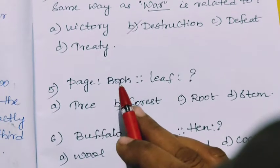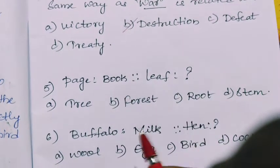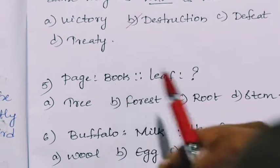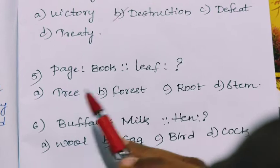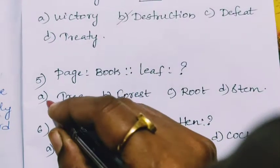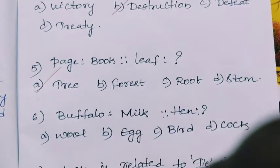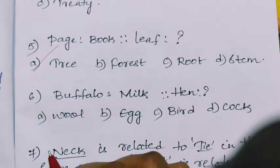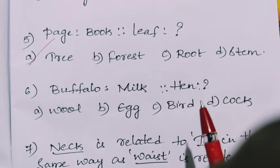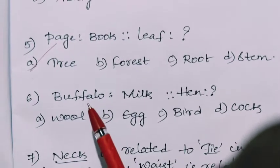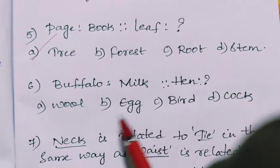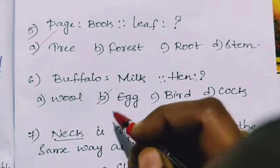Next question. Page is to book and leaf is to what? So the page is present in the book and leaf is present on what? Tree, forest, root, stem. So leaf is present on the tree. Next question. Buffalo is to milk and hen is to what? We know buffalo gives milk and hen gives egg, so egg is the answer.